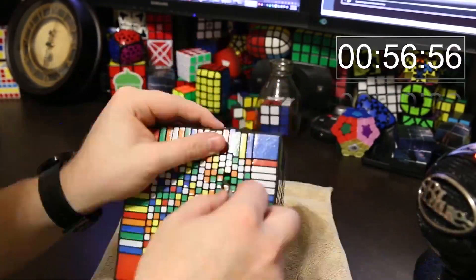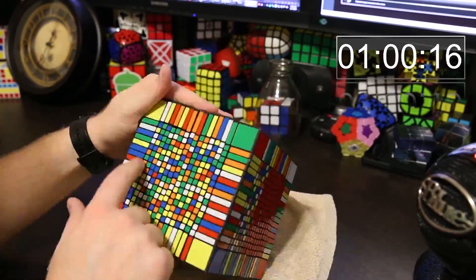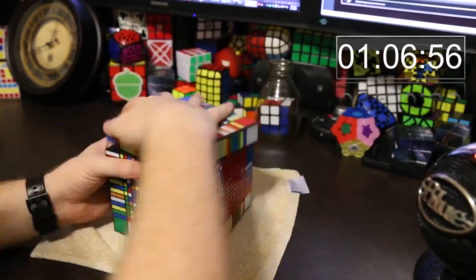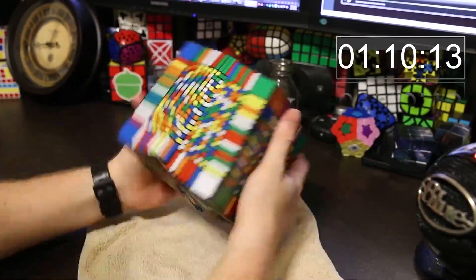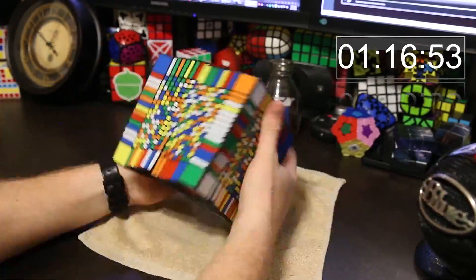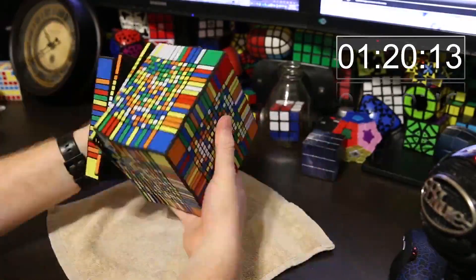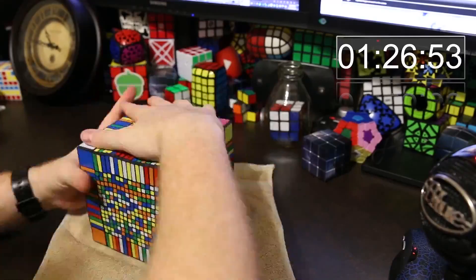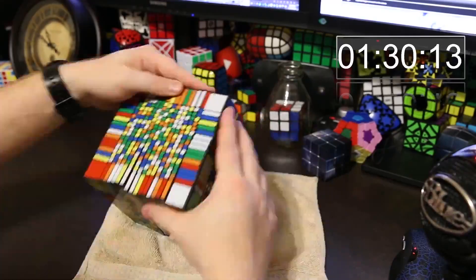The way you solve a 17x17 is just like you would a 7x7 or a 5x5. If you can solve one of those, then a 17x17 isn't that hard, but it is very, very tedious. The way I'm solving it is using the reduction method, and basically you reduce the cube into a 3x3 and then you solve the 3x3.